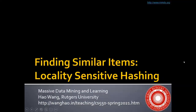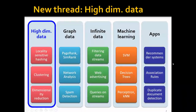In this lecture, we will talk about finding similar items. In particular, we will cover one of the most famous algorithms in computer science, which is locality-sensitive hashing, or LSH. If you remember the big picture of our course, this lecture will be the start of a new thread, which is mining and learning on high-dimensional data. And LSH here tries to find similar items.